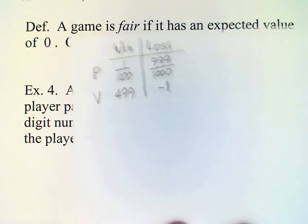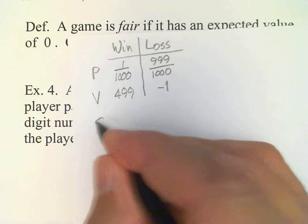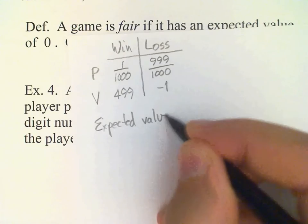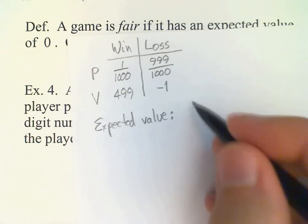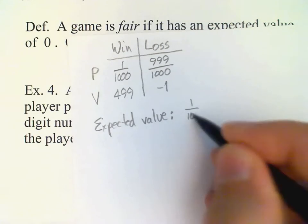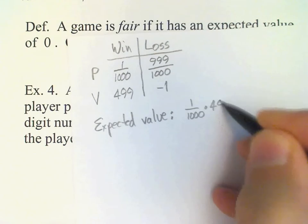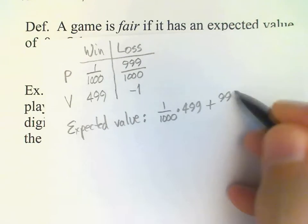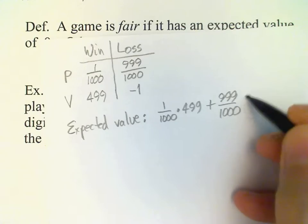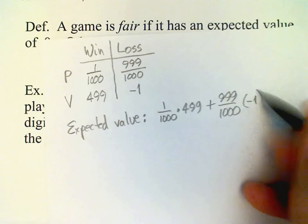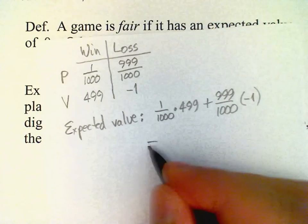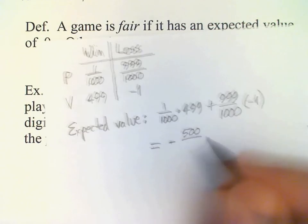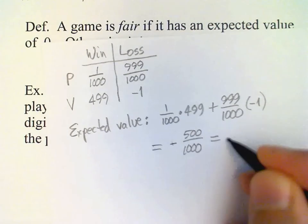Okay, so therefore the expected value is 1 out of 1,000 times $499 plus 999 out of 1,000 times negative 1. Okay, so again, this works out to negative 500 out of 1,000 or a negative 50 cents.